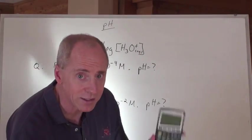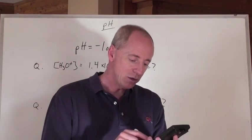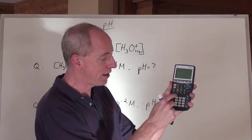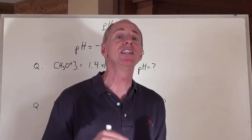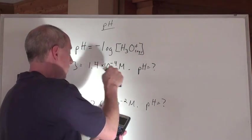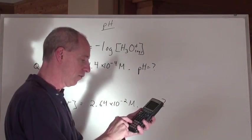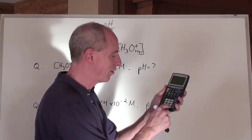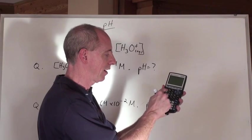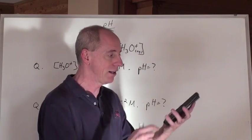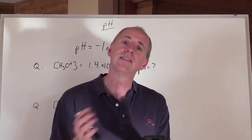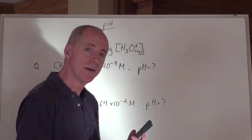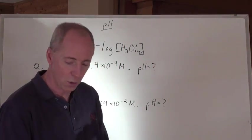When you take your scientific calculator, punch this in: 1.4, then second function EE, negative 4. Then go negative, then log, then 1.4, second function EE, negative 4, enter. What I get in my calculator is 3.85387... So some people look at that and say, well, that's two significant digits, so keep two significant digits.